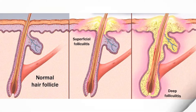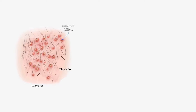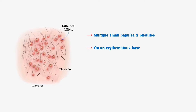People with superficial folliculitis present with multiple small papules and pustules on an erythematous base. Each lesion contains a central hair, although it may not always be visible. Patients will also complain of associated pruritus and discomfort.